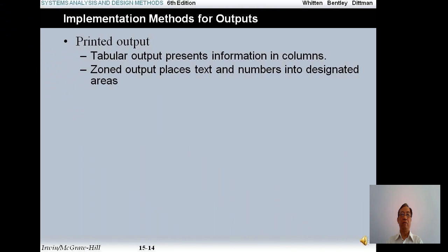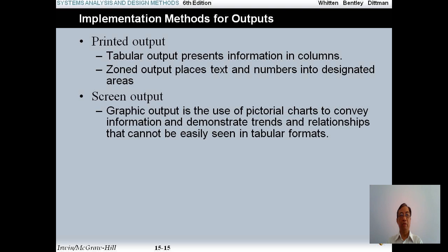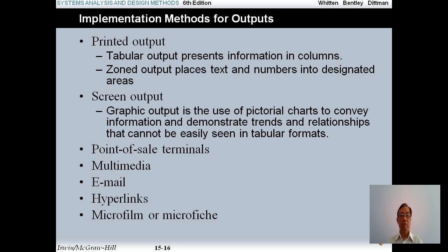Output implementation methods include printing output. Tabular output presents information in columns. Zone output places data into a specific area on the screen. There is also graphic output, which uses pictorial charts to convey information and demonstrate trends and relationships that can be easily seen in tabular format. You can also use file or terminal, multimedia, email, hyperlink, microfilm, or microfiche.